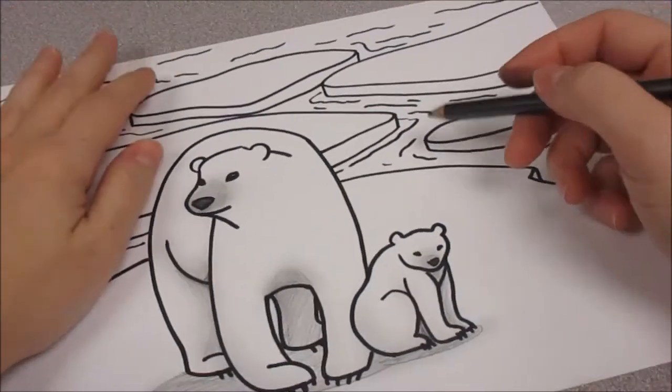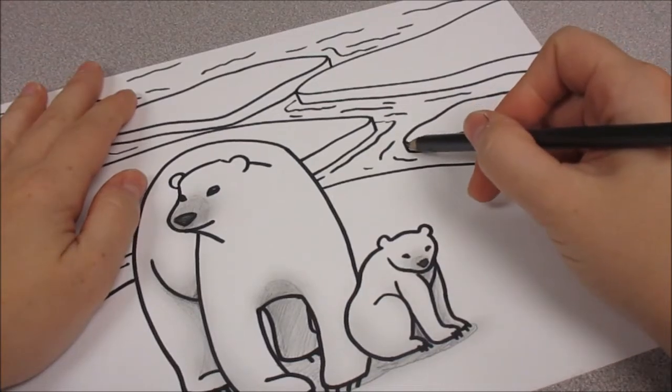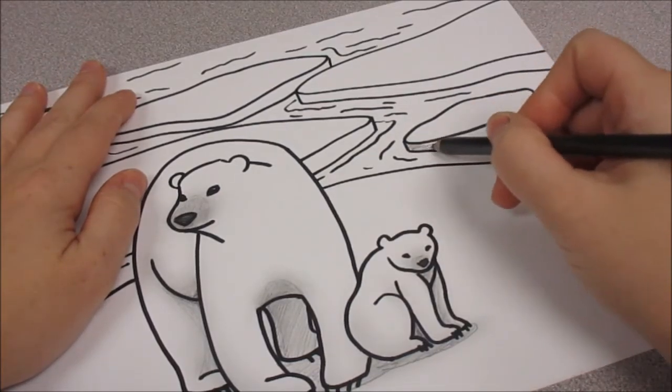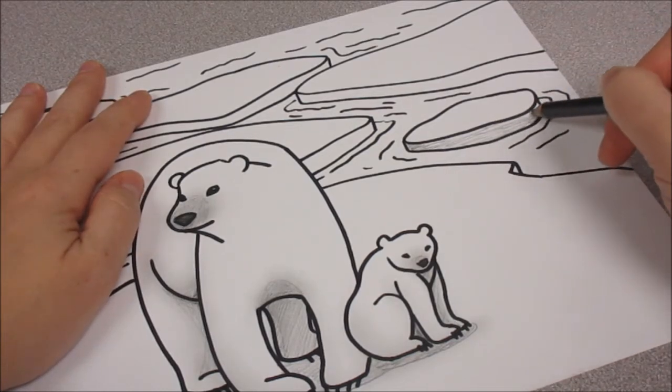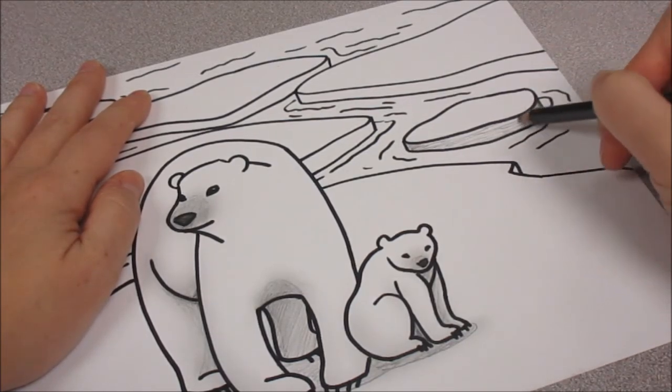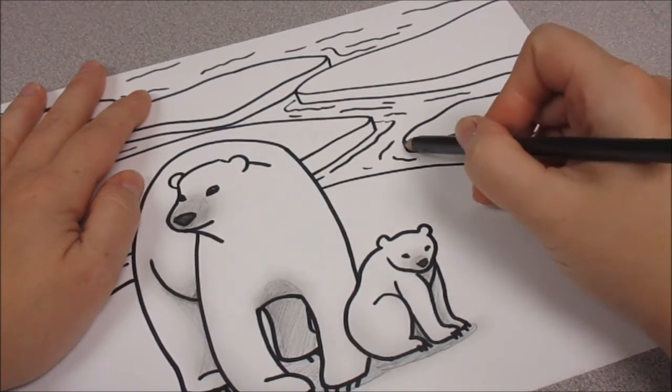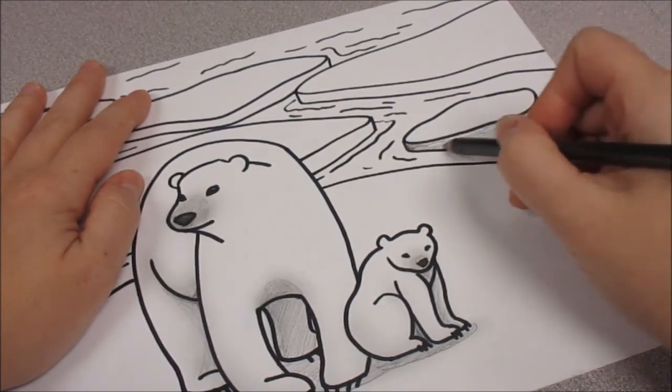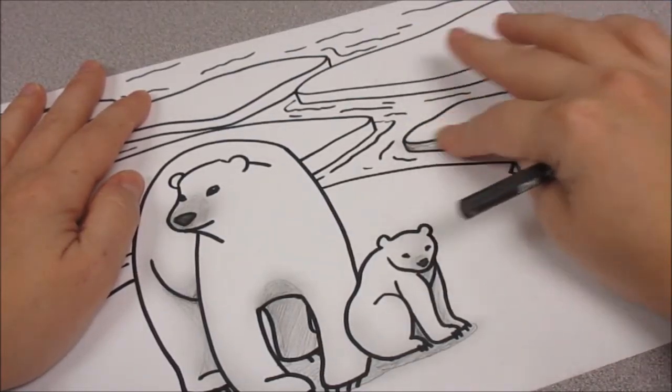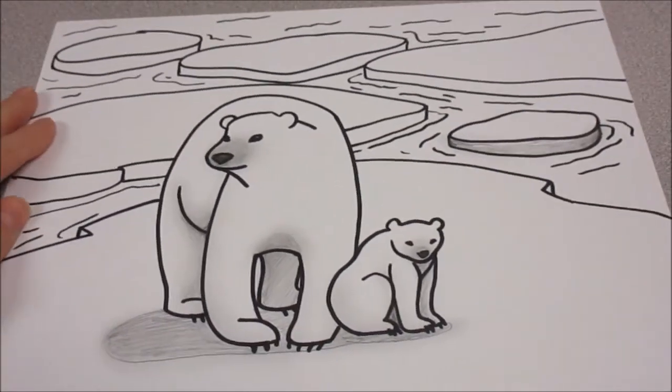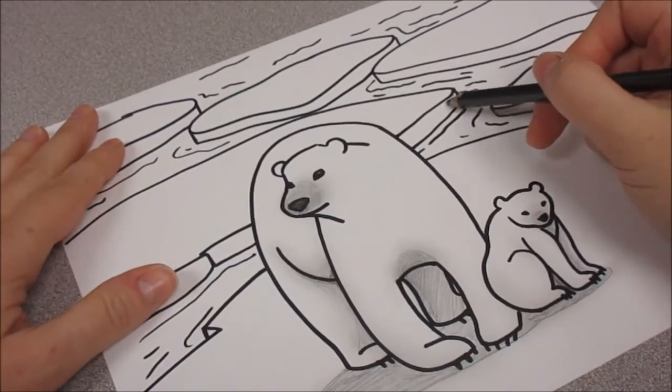All right, now on each ice patch, I'm going to shade that little shelf part. As I get to the edge of it, where that little straight line is, I make it a little darker. And then in the middle, I let it be a little lighter.